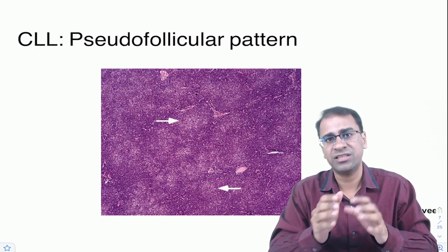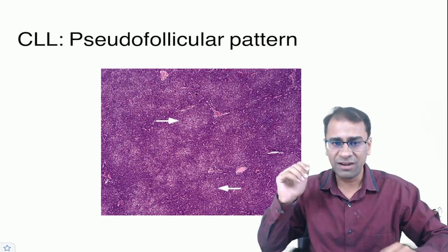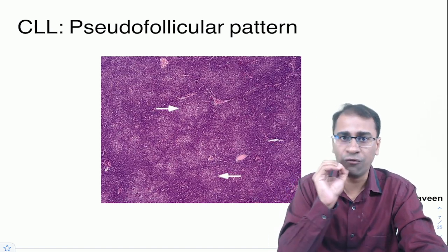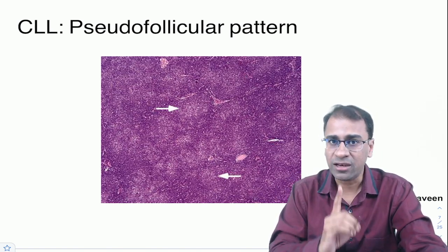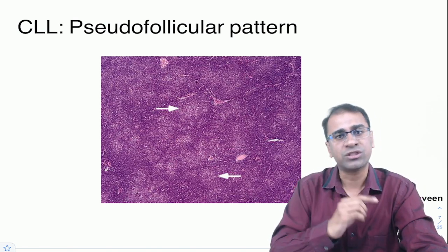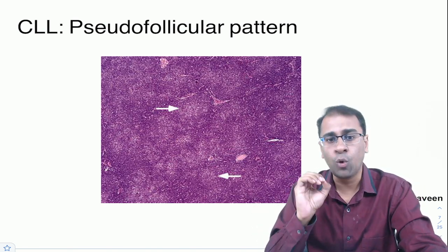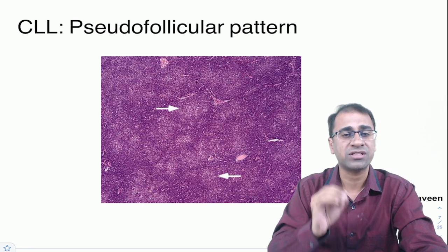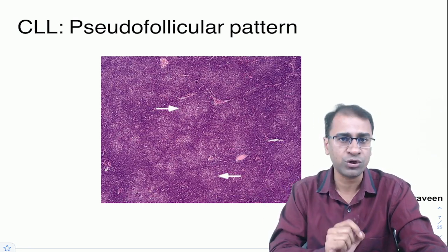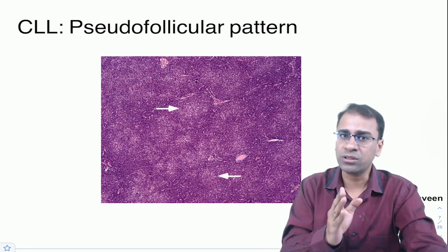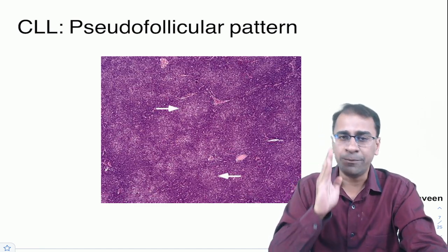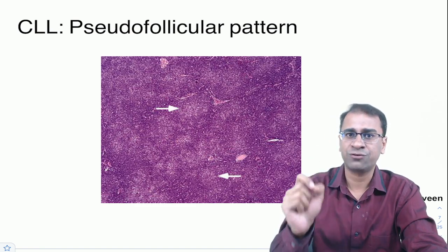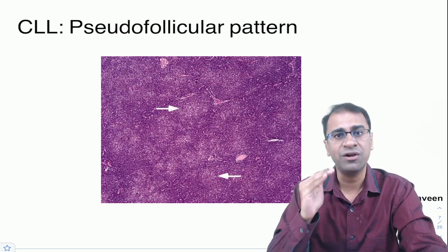Second is mantle zone lymphoma, which comes from the mantle zone. The key translocation is t(11;14) — chromosome 14 is the constant immunoglobulin gene, and chromosome 11 carries cyclin D1, encoded by the BCL1 gene. In cyclin D1-negative cases, diagnosis is made by SOX11 gene expression. Both CLL and mantle zone lymphoma are mature B cell tumors, so CD19 is positive. Both are CD5 positive, but CLL is CD23 positive while mantle zone lymphoma is CD23 negative.